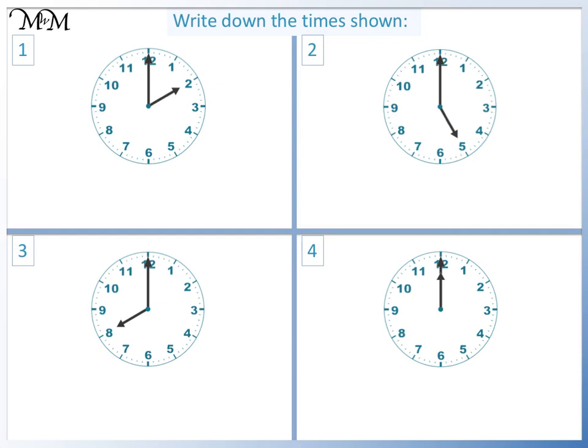Question 1. The minute hand is pointing at 12, so we know that the time will be o'clock. The hour hand is pointing at 2. The time is 2 o'clock.